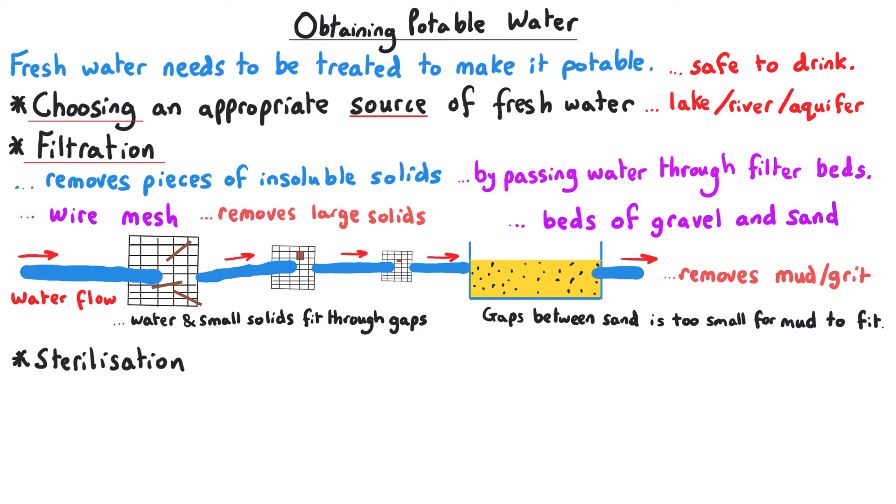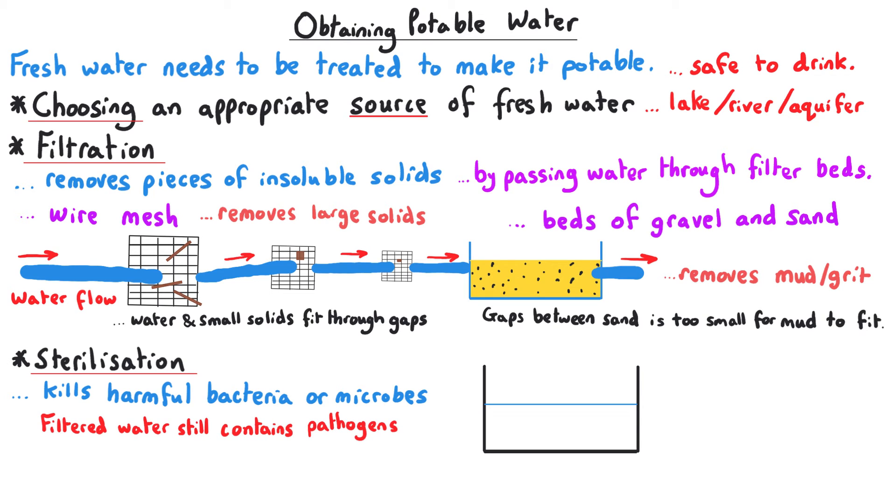The next stage is sterilization, done to kill harmful bacteria or microbes present in the water that don't get removed by filtration. There are a few different sterilizing agents we can use. The most popular is chlorine gas, bubbled through the water as it is treated. As an alternative, we might use ozone gas instead, also bubbling it through the water. Alternatively, we might shine ultraviolet or UV light on the water to kill any bacteria.